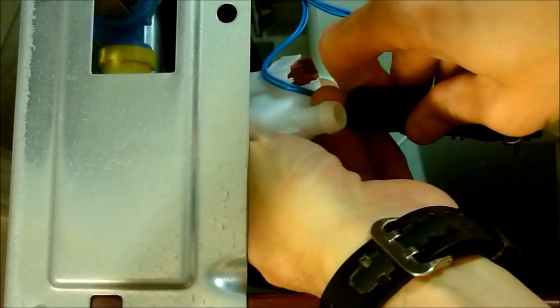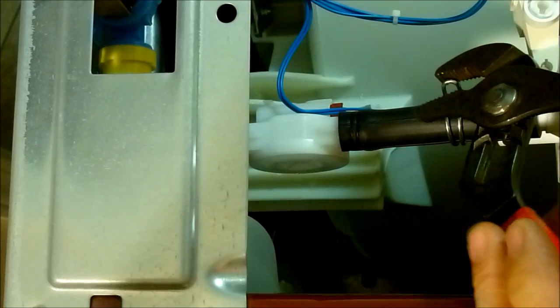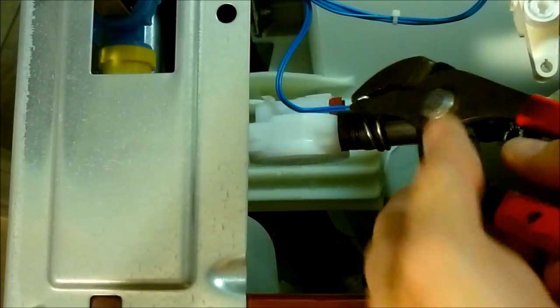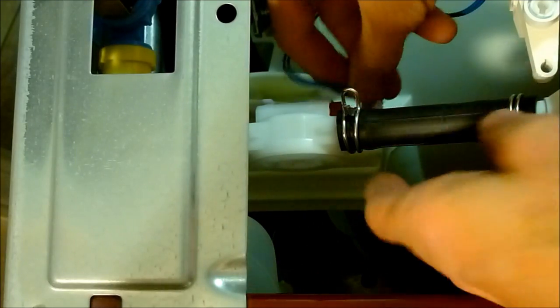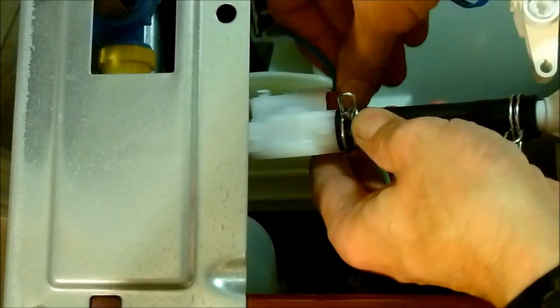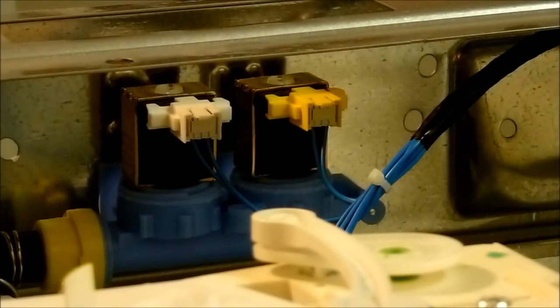Okay, so next we'll connect the soap dispenser tube to the water meter assembly. Don't forget the clamp on that one as well. Go ahead and put the reed switch back into it. Go ahead and reconnect the hot and the cold connectors to the solenoids. And I think we're done inside. We'll hook up the water lines and give it a test.